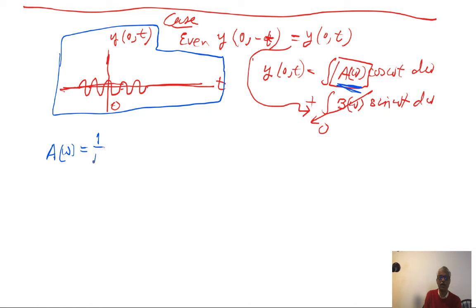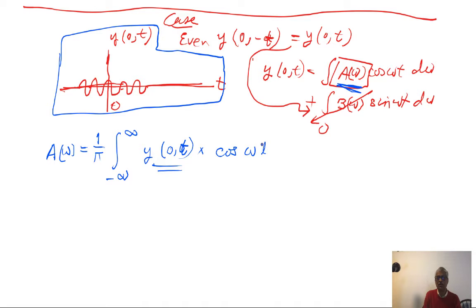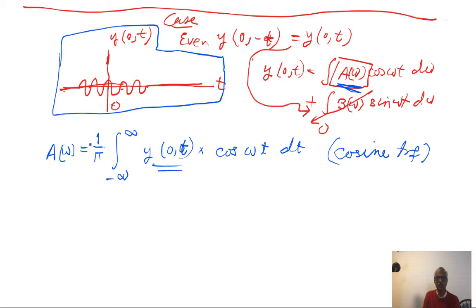So a(ω) is defined as one over π times the integral from minus infinity to infinity of y(0,t)·cos(ωt) dt. This is the cosine transform — that is its definition. The 1/π factor comes from the particular notation chosen, which is the choice made in our textbook.